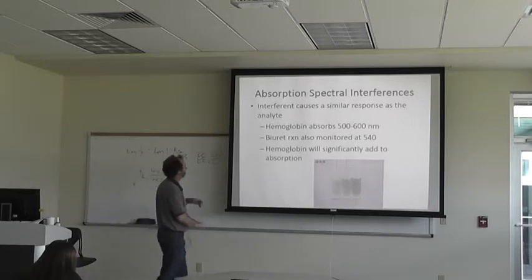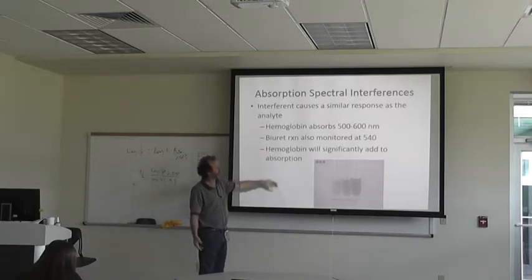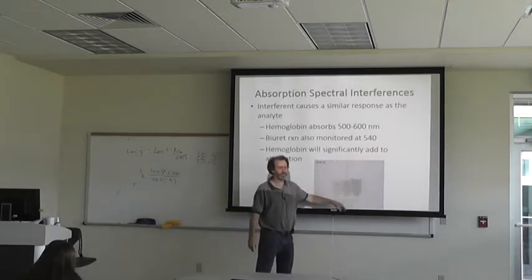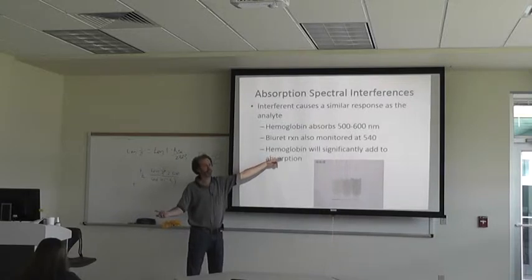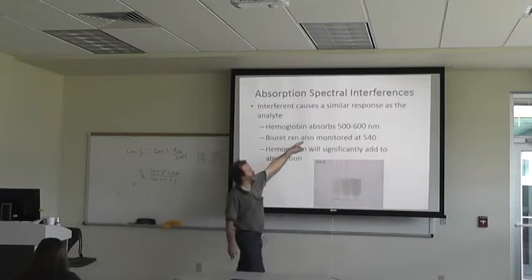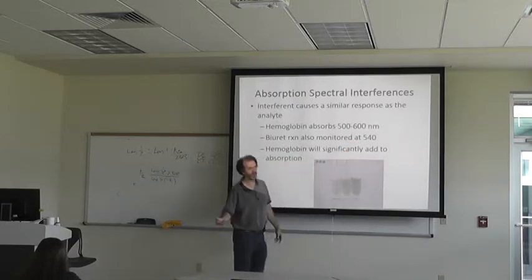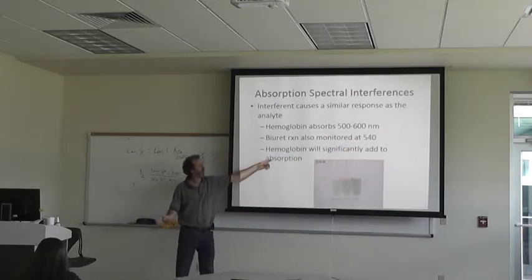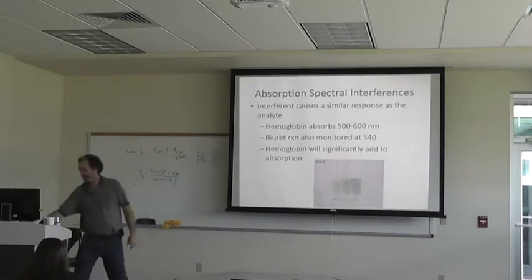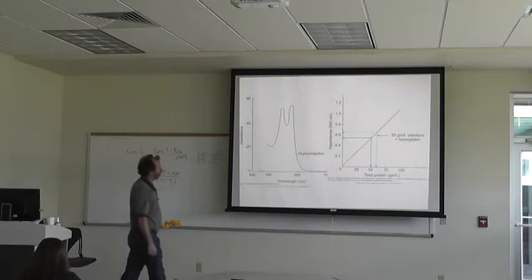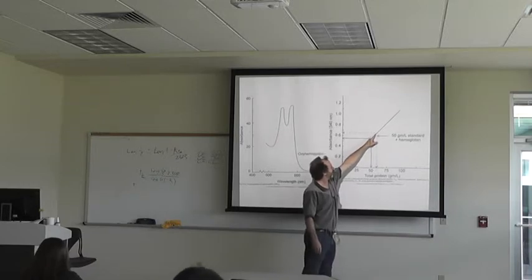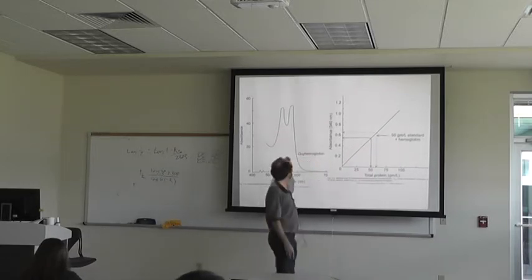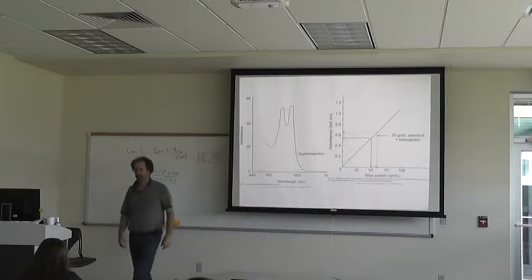Absorption spectral interferences: an interferent causes a similar response to the analyte. Here's an example of different amounts of heme in samples — you can see it gets redder and redder as concentration increases. Hemoglobin will interfere with the biuret reaction, which measures protein concentration. Hemoglobin absorbs at 500–600 nm and the biuret reaction absorbs at 540 nm, so it will add a significant amount of absorption and throw off your standard. Here's an example of a standard curve where hemoglobin was added — it appears like there's more than there should be.